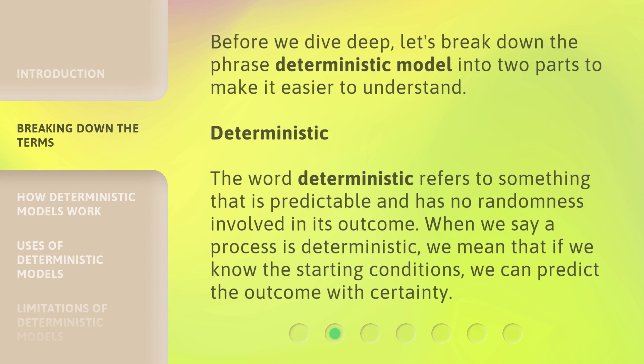Before we dive deep, let's break down the phrase Deterministic Model into two parts to make it easier to understand. Deterministic: the word deterministic refers to something that is predictable and has no randomness involved in its outcome. When we say a process is deterministic, we mean that if we know the starting conditions, we can predict the outcome with certainty.